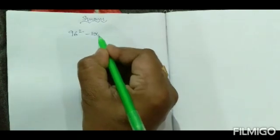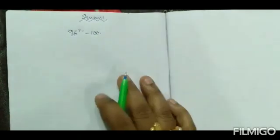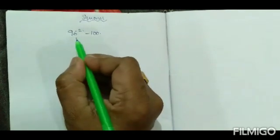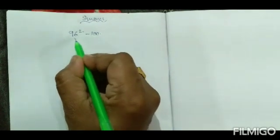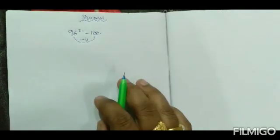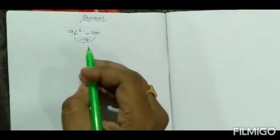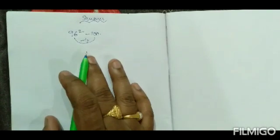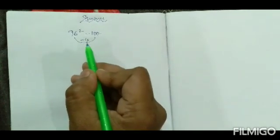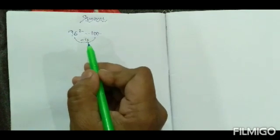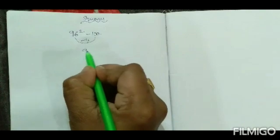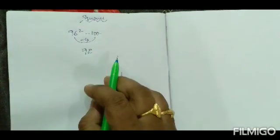Here we are taking 100 as our benchmark. The difference between 96 and 100 is 4 — that is, 4 less than 100. In 2 steps we can find this square. Step number 1: the difference is 4, so we subtract 4 from 96. 96 minus 4 equals 92.